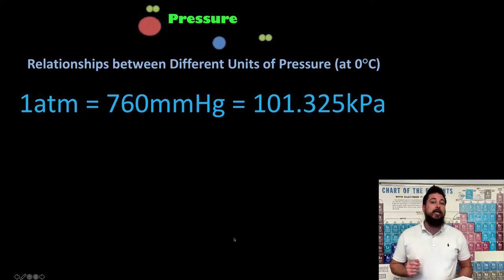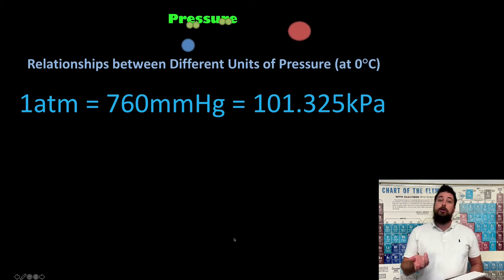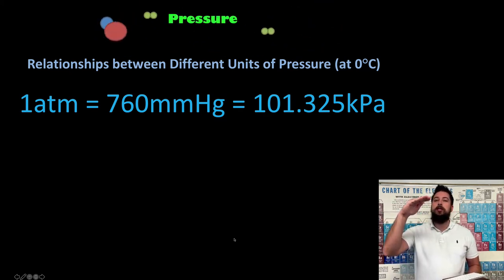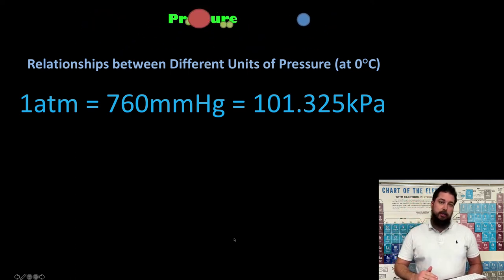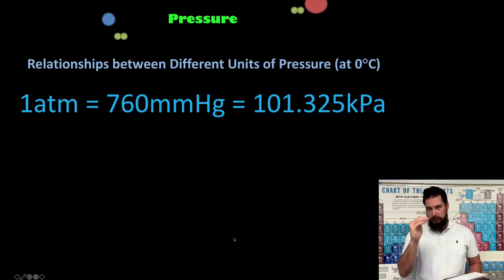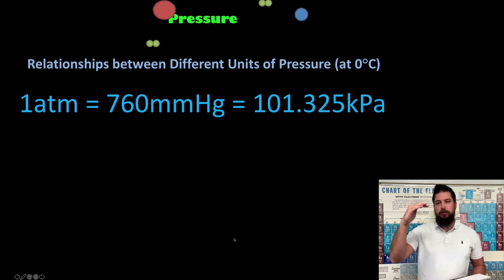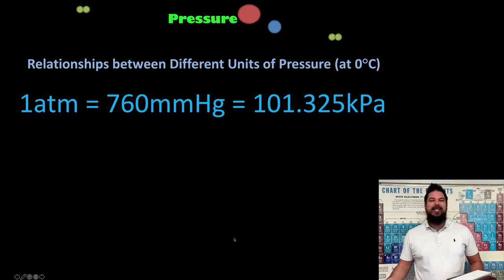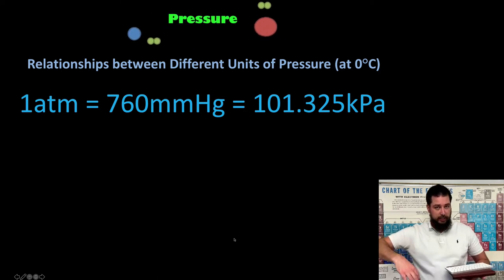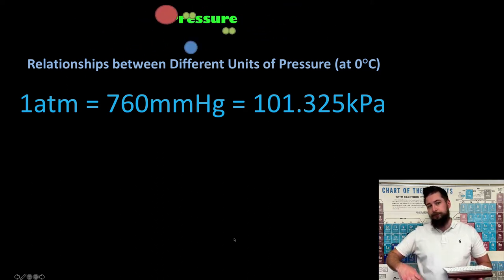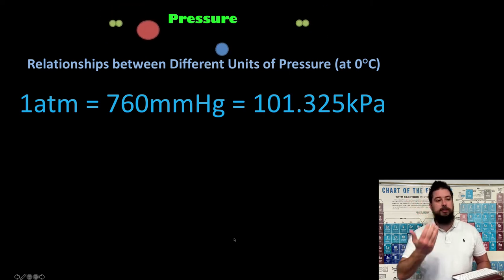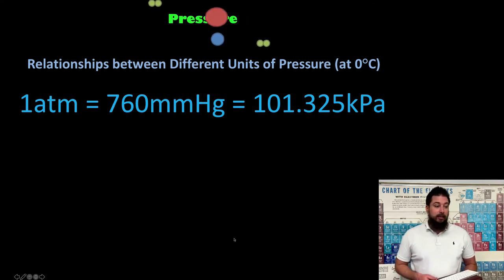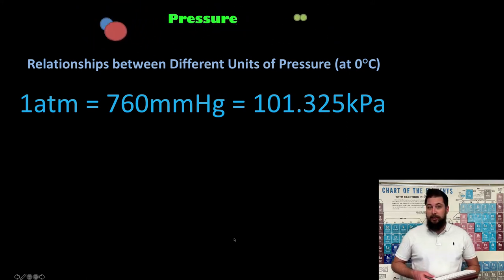Millimeters of mercury comes from taking a tube of mercury and placing it upside down into a pool of mercury. The weight of the mercury causes the level in the sealed tube to go down, but only so far. The more pressure there is on the outside pushing down on the mercury, the more mercury will go up into the tube — and that height in millimeters is the measurement.